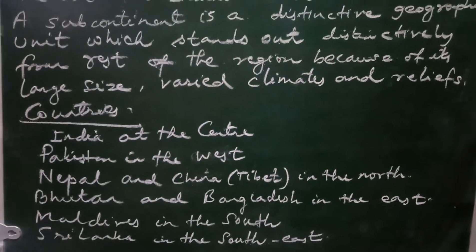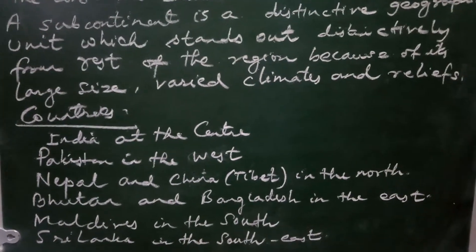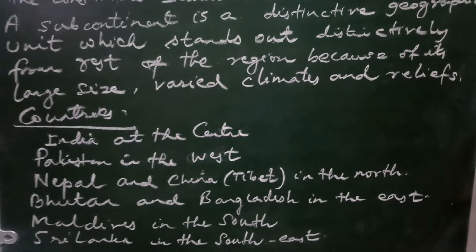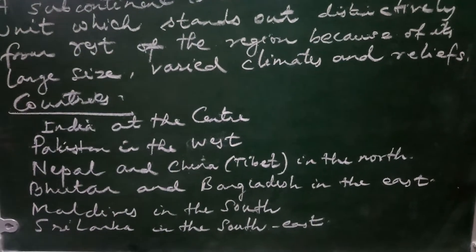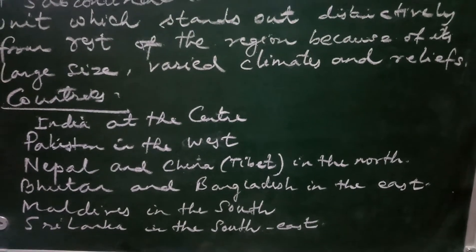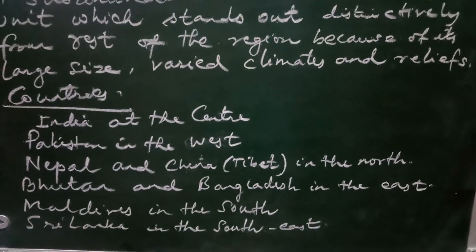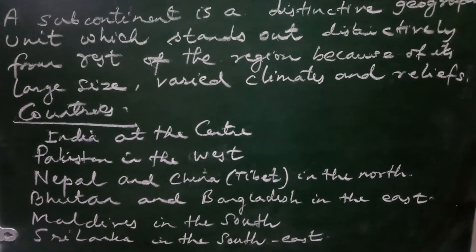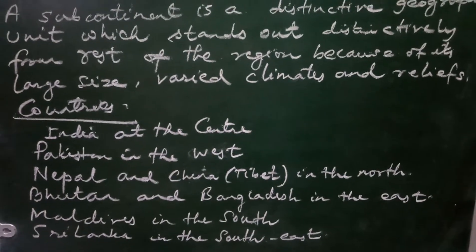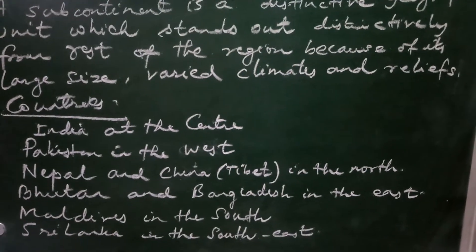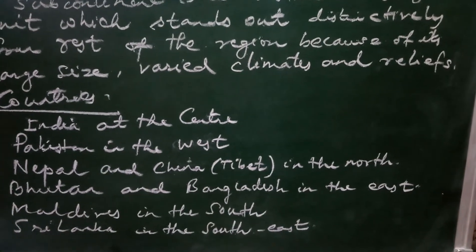The countries which constitute the Indian subcontinent are: India at the center, Pakistan to the west, Nepal and the Tibetan part of China to the north, Bhutan and Bangladesh to the east, Maldives to the south, and Sri Lanka to the south east. So the Indian subcontinent is formed by India, Pakistan, Nepal, Bhutan, Maldives, and Sri Lanka.